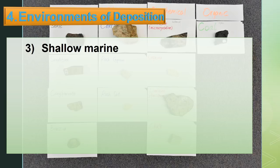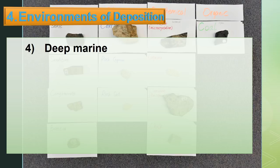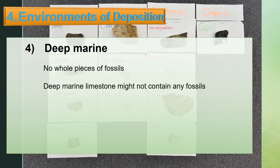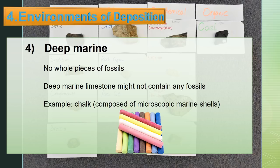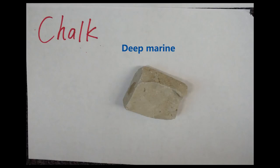Shallow marine environments feature large or whole pieces of fossils such as clamshells and corals. Deep marine environments have no whole pieces of fossils — deep marine limestone might not contain any fossils. For example, chalk is composed of microscopic marine shells. Coquina is deposited in shallow marine, and chalk is deposited in deep marine environments.